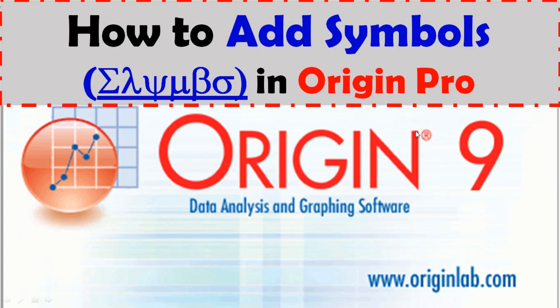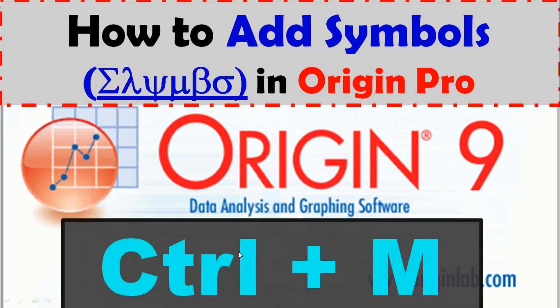This video is about how to use symbols in Origin. These are the symbols we sometimes need to put in graphs. There is a shortcut for this, and that is Ctrl+M. Just press Ctrl and click M.